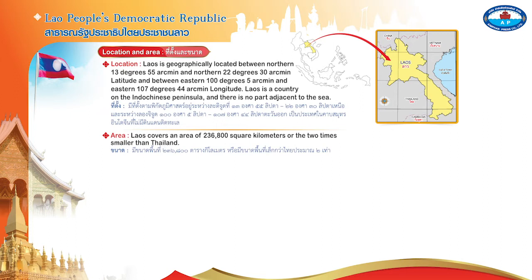Area: Laos covers an area of 236,800 square kilometers, or two-fold smaller than Thailand.